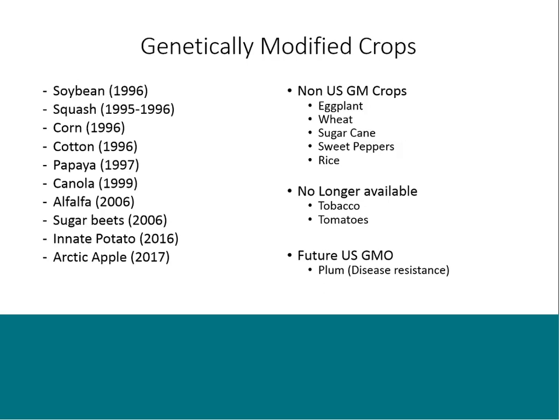Some GMO crops you won't find in the U.S.: eggplant is common only to Bangladesh; wheat is grown in Australia and New Zealand; sugar cane is in Indonesia; sweet peppers are grown in China; and there's talk of a genetically modified rice potentially getting approved in China. Genetically modified tobacco and tomatoes had been on the market at one point but were pulled — either due to lack of consumer interest or failure to meet testing qualifications. The next known GMO likely to hit our market is a disease-resistant plum.